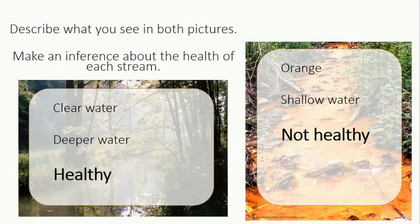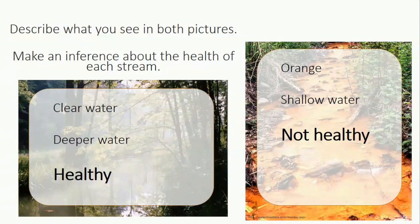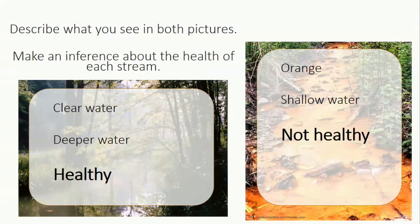The most noticeable difference between these two streams is the color. The AMD-affected stream is bright orange, while the unaffected stream looks clear. There are other observations you may have made about these streams, including the depth of water, extensive shade from nearby trees, and so on. Ultimately, the stream without AMD is healthier than the stream with AMD.